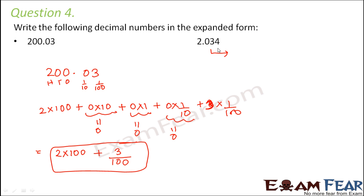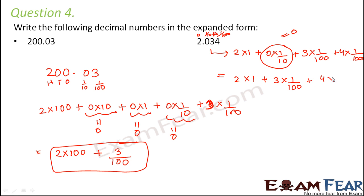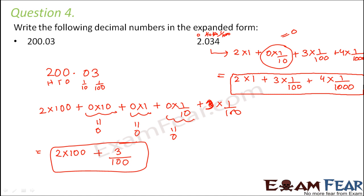Now let us look at 2.034. Here: ones place, tenths place, hundredths place, and thousandths place. Therefore this can be written as 2 × 1 + 0 × (1/10) + 3 × (1/100) + 4 × (1/1000). So this is the expanded form of 2.034.